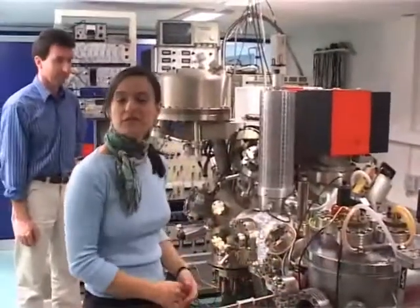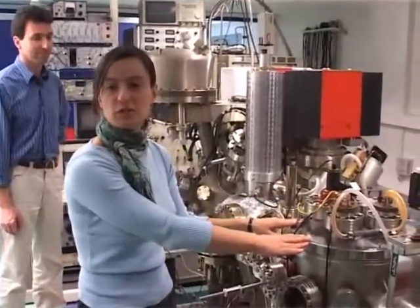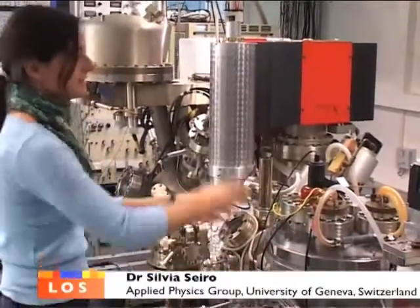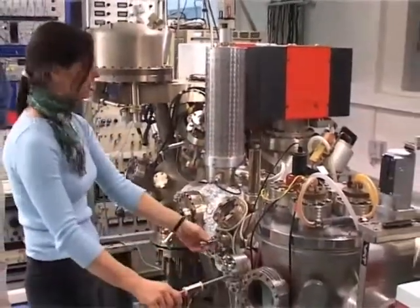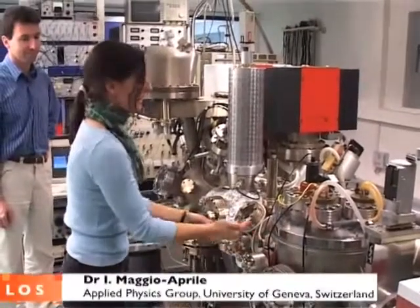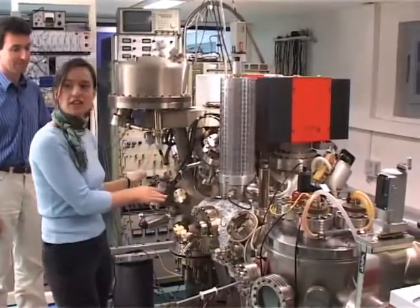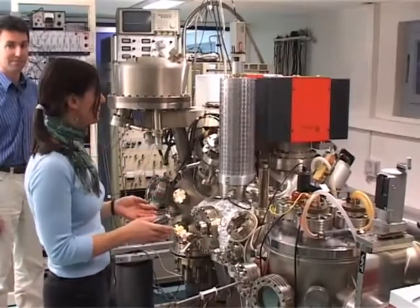This is our system for surface analysis of thin films. We can grow thin films of superconductors and other materials in this deposition chamber by sputtering. Then by a system of valves and manipulators we can translate the sample we have just grown without touching the outer atmosphere so there's no contamination into the analysis chamber where different kinds of measurements can be done.